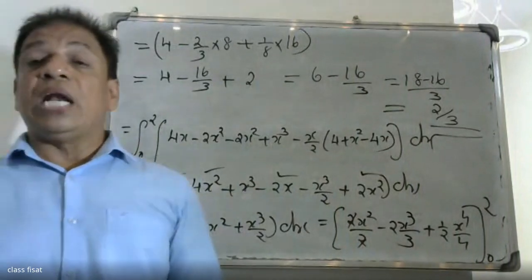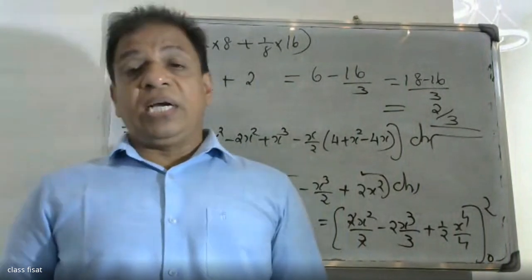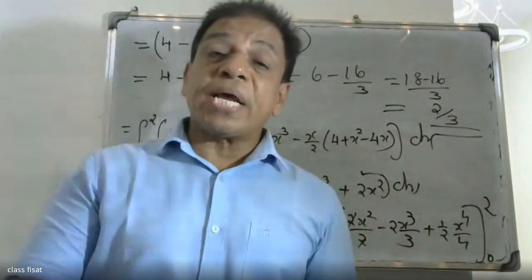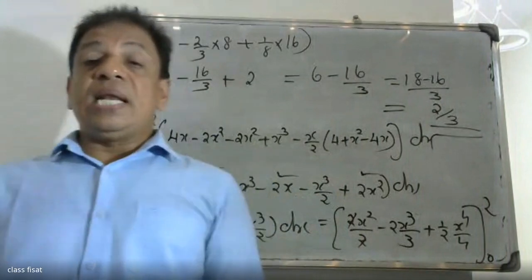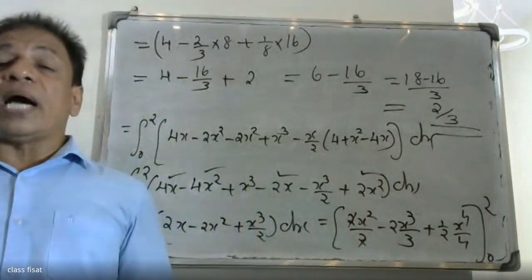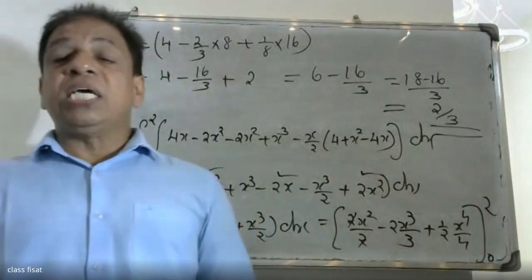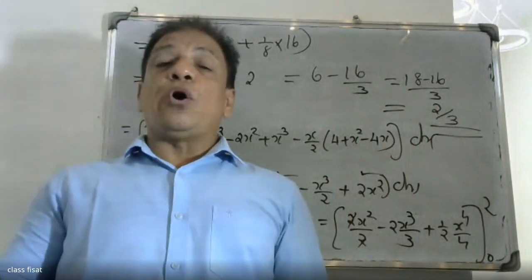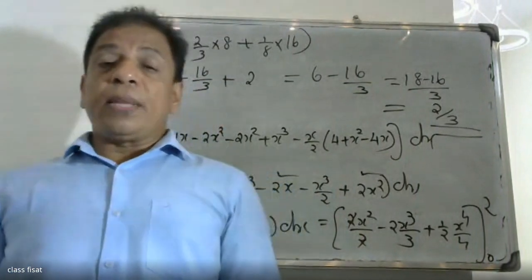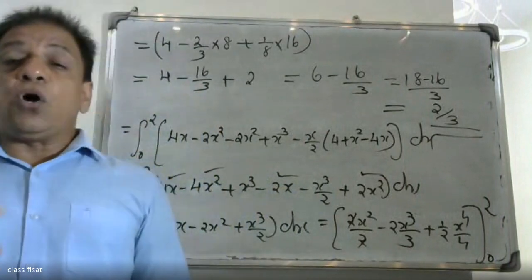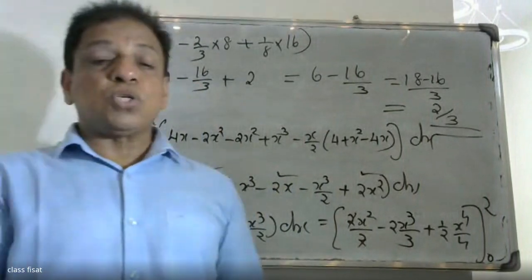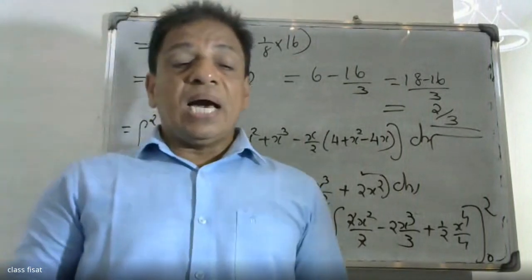The formula for the divergence theorem uses the del operator: del dot F equals i(d/dx) plus j(d/dy) plus k(d/dz). We compute the triple integral of div F over the volume region enclosed by the surface.